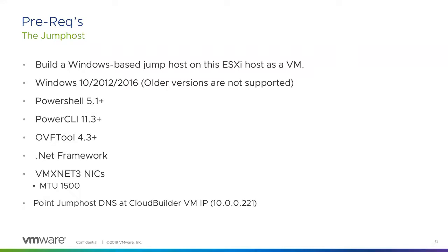We also need the .NET framework and VMXNet3 NICs on the jump host — though some E1000s seem to work fine. We also need to point the DNS for the jump host at the Cloud Builder virtual machine first. You can point your other lab DNS as a secondary, but the first DNS entry needs to point to the Cloud Builder appliance. We'll see a little bit of this in the demo of where that IP comes from.